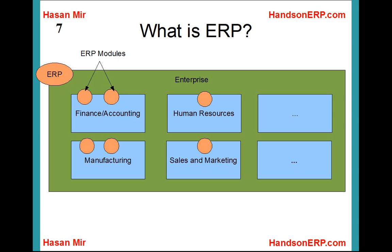The whole company would be using the ERP, but each department would be using part of ERP. The small circles in this diagram represent the part of ERP that each department is using, and the bigger circle at the top left corner represents the whole company using the ERP software. Just keep in mind that ERP is not one software — it has parts or modules. Each module is a standalone software used by different departments.